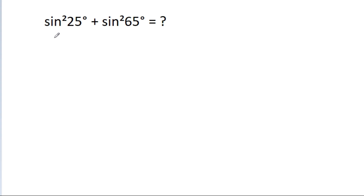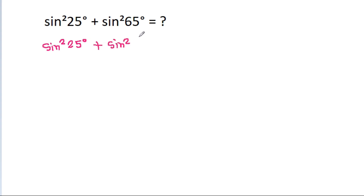We have to find the value of sin square 25 degree plus sin square 65 degree. It is sin square 25 degree plus sin square, and 65 degree is 90 degree minus 25 degree.